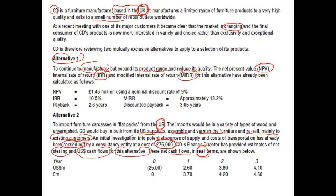Now let's discuss the £75,000. What is your reaction? What is the treatment? It's sunk cost. So what is the treatment? It should be ignored. The lesson is that even at this stage in investment appraisal, the examiner may throw in some irrelevant costs, and it's up to you to identify them and ignore them.